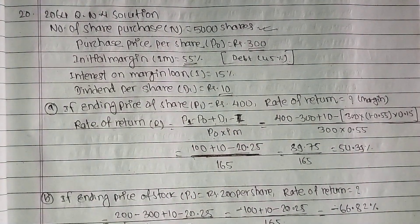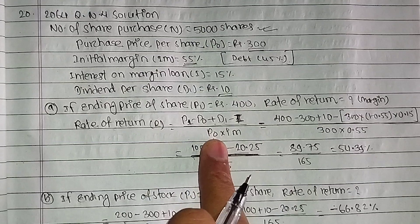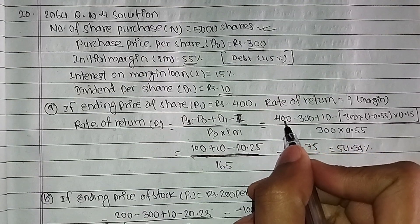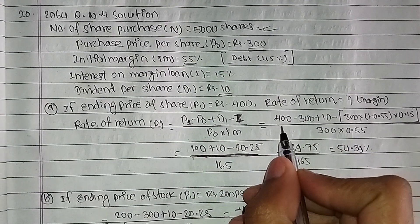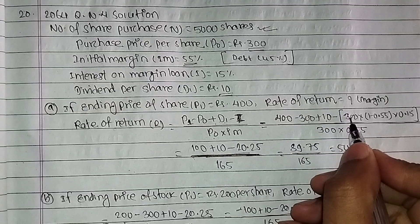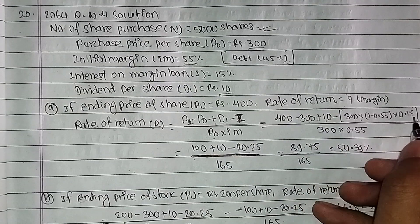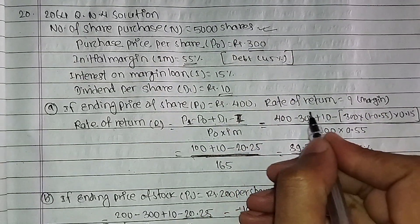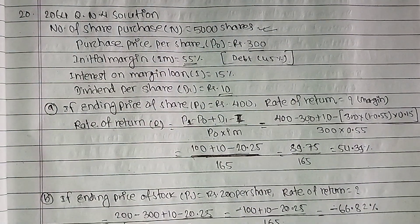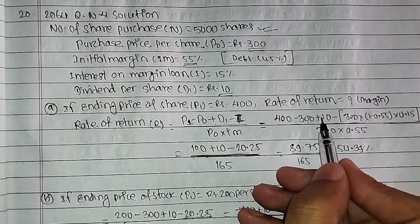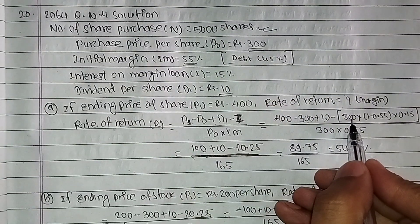For the cash case, the initial margin is 100%, so the denominator becomes P0 into 100%. Applying the formula: (400 minus 300 plus 10) divided by (300 into 0.55), minus the interest on the loan which is 45% into 15%. The numerator is 400 minus 300 plus 10, and we subtract the margin loan interest cost.